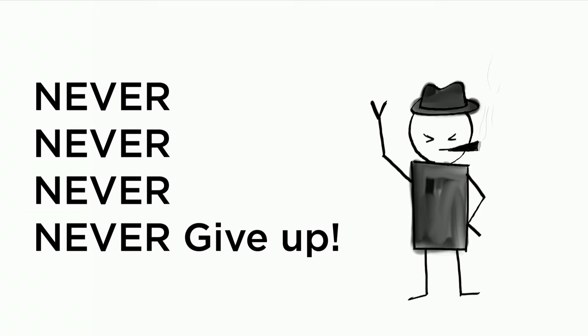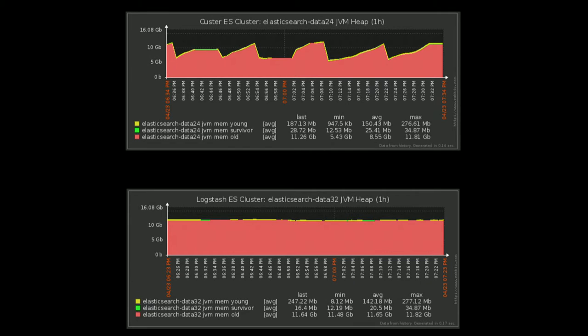Then we had two clusters, so we started to compare the metrics between them. We noticed that the metrics were pretty much on par between the two, with the exception of the JVM heap usage. In our first cluster, the heap usage was very heavy, with little to no garbage collection.